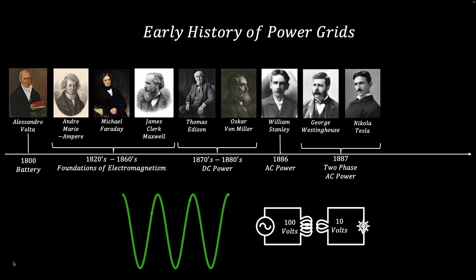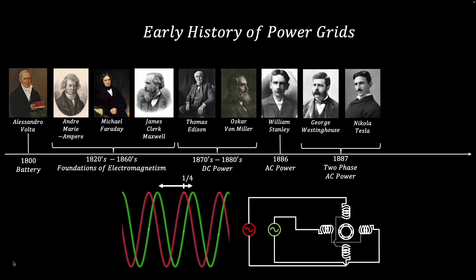Then in 1887, Nikola Tesla patented the first two-phase AC power system. This used two sinusoidal signals separated by one-quarter of a wavelength, which allowed for controlled rotation in electric motors.